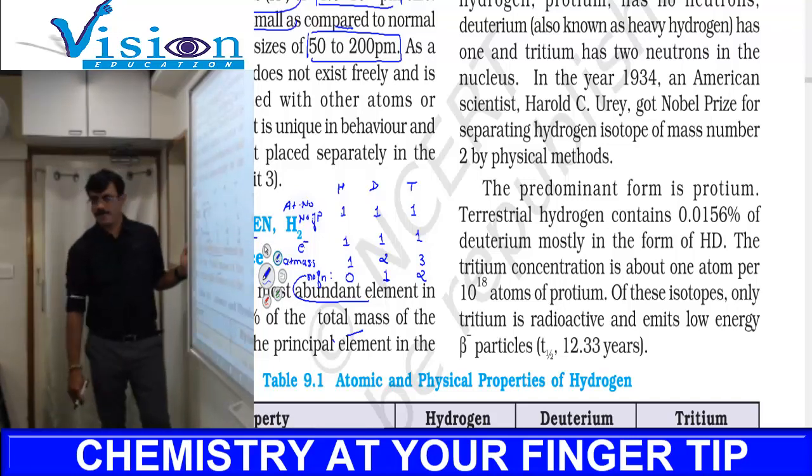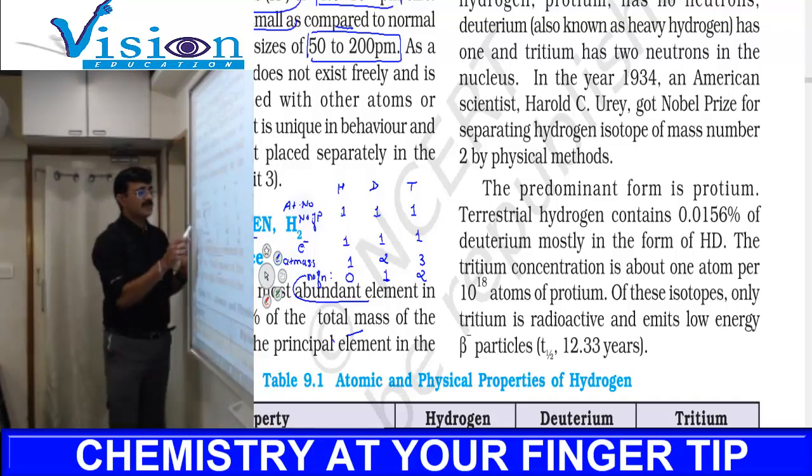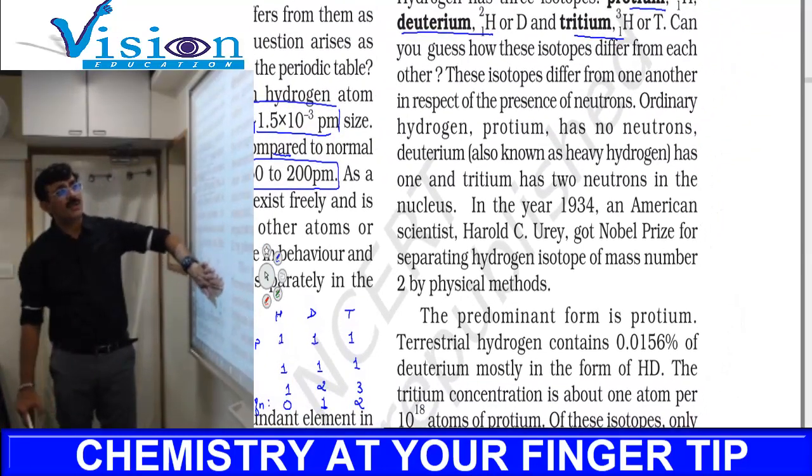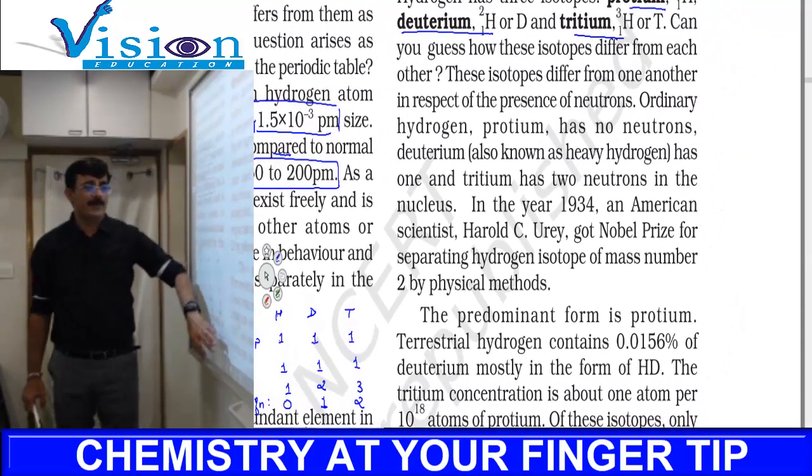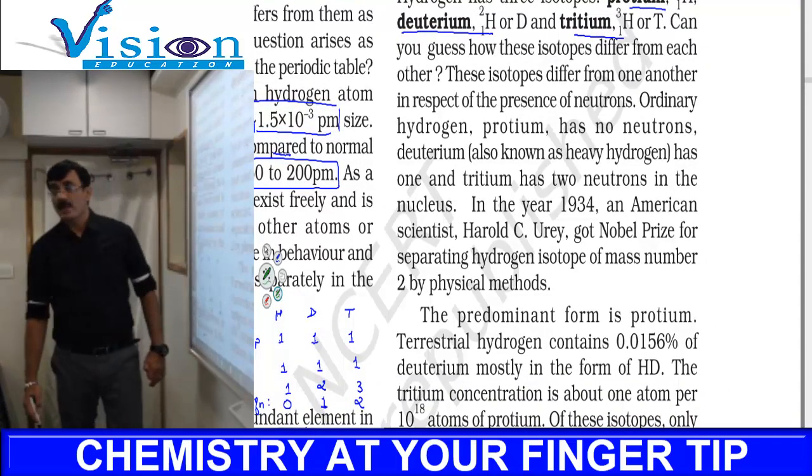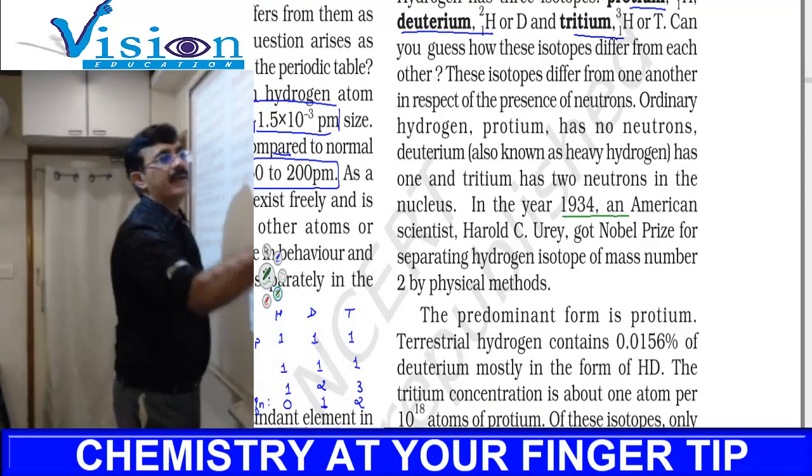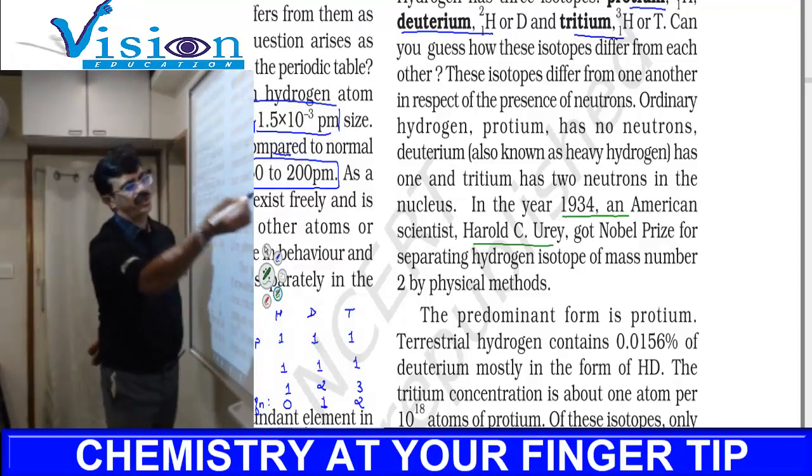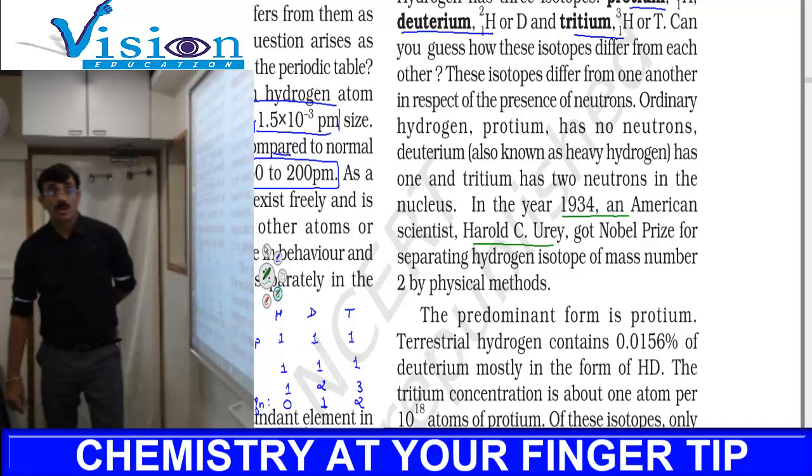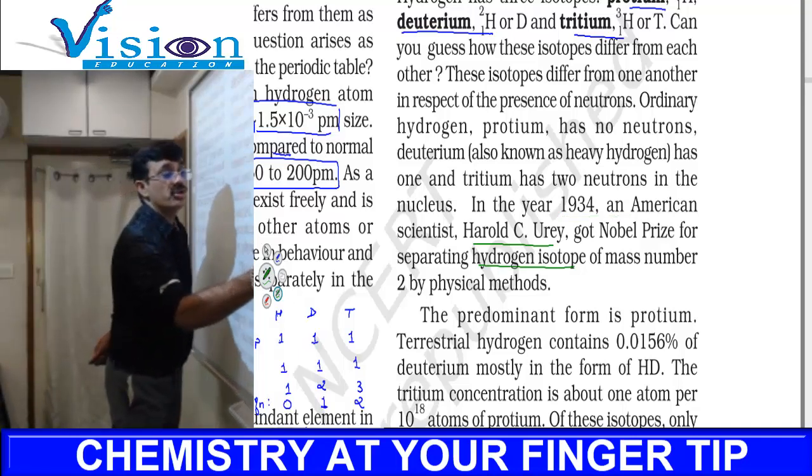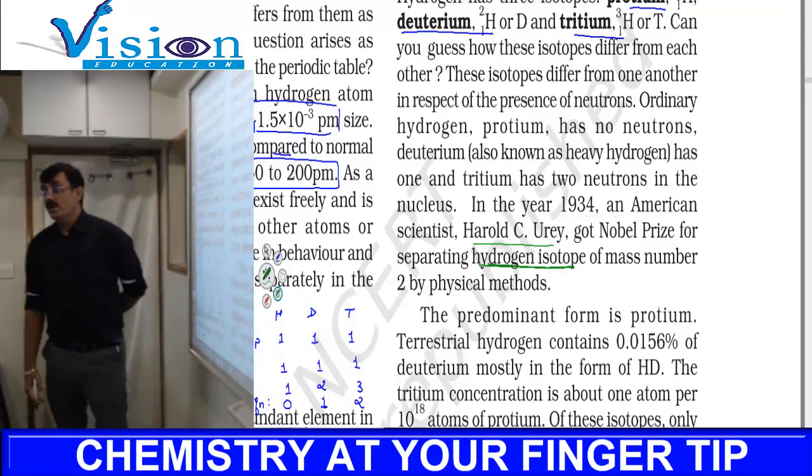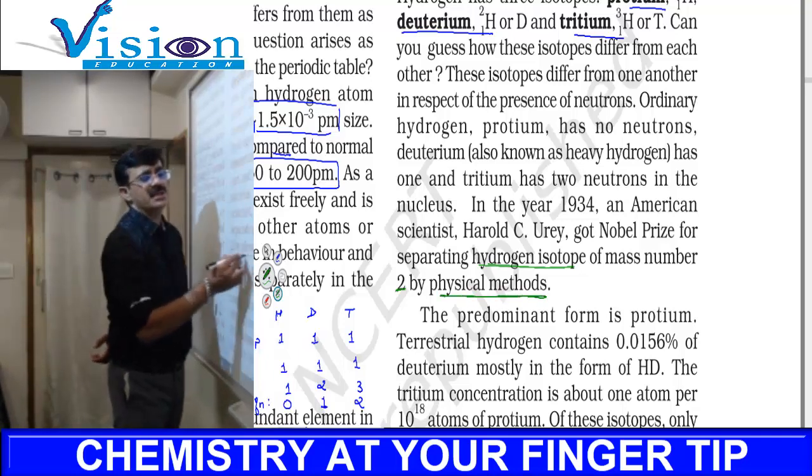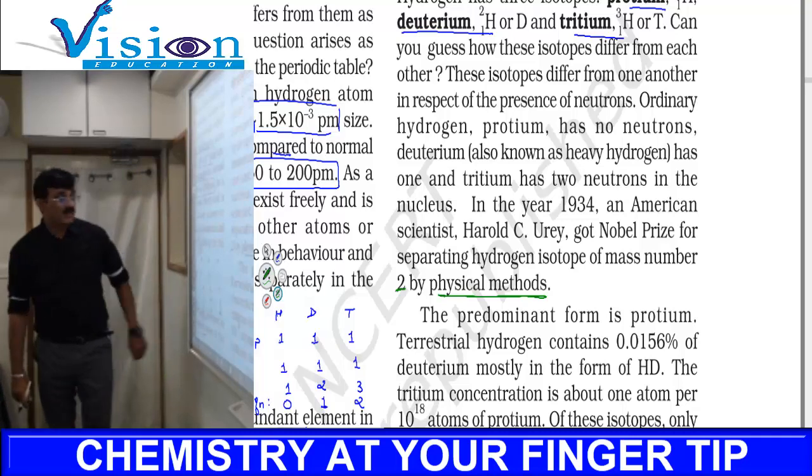The most basic difference is this. Another difference is that their proportion is different. In 1934, American scientist Harold C. Urey got the Nobel Prize because he separated hydrogen isotopes. He separated deuterium by simple physical methods, which is not that easy, but he could do that. That's why he was awarded the Nobel Prize.